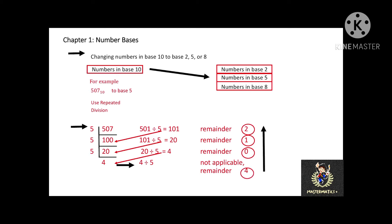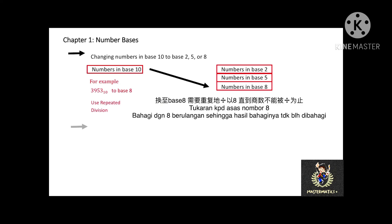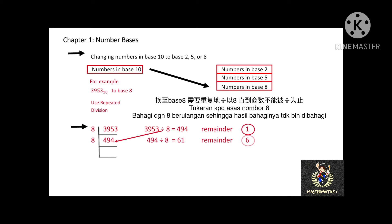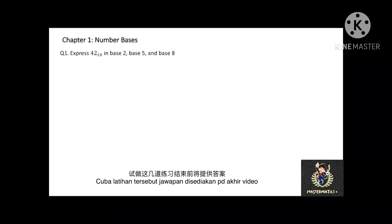In the last example, you can try to use the same method to convert 3953 base 10 to base 8. Since it is converted to base 8, you have to divide repeatedly by 8 until the quotient cannot be divided anymore. Then list down the remainder from each division. From bottom to top, you will get 7561 base 8. You may pause the video and try this question — the answers are provided at the end of this video.